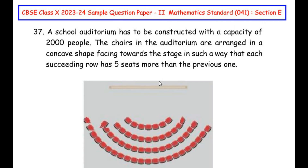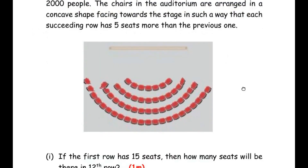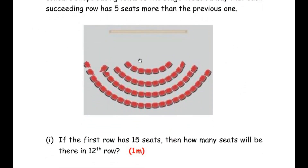This question is from the Arithmetic Progressions chapter. A school auditorium has to be constructed with a capacity of 2000 people. The chairs in the auditorium are arranged in a concave shape facing towards the stage in such a way that each succeeding row has five seats more than the previous one. If the first row has 15 seats, then how many seats will be there in the 12th row?